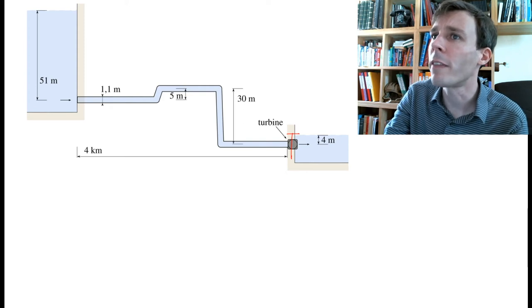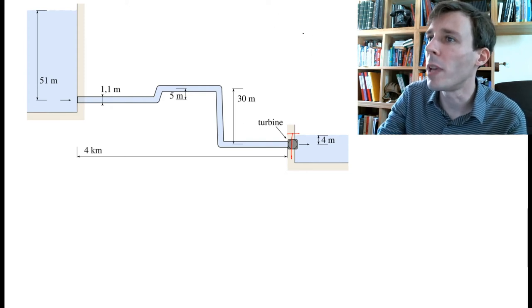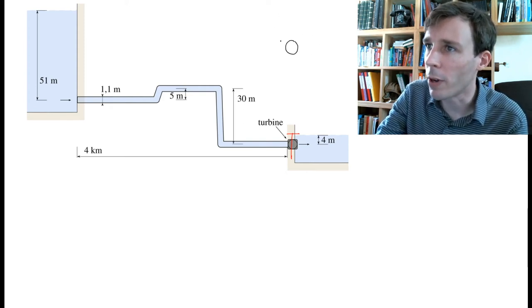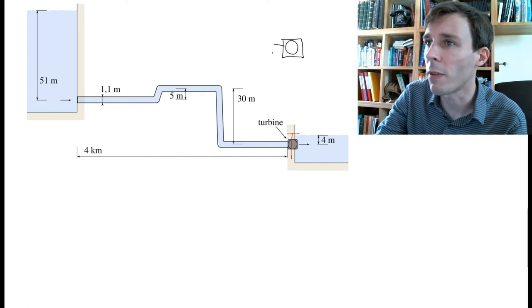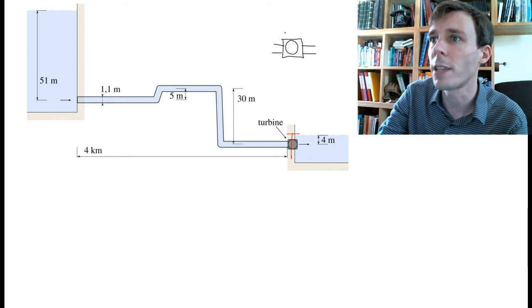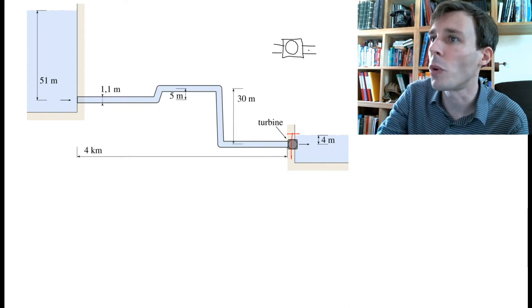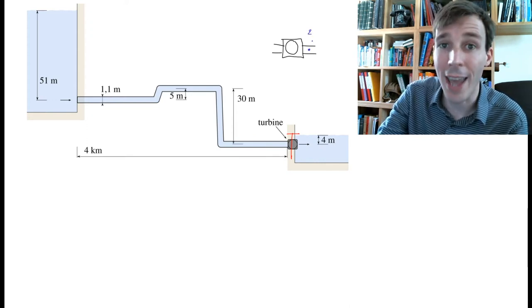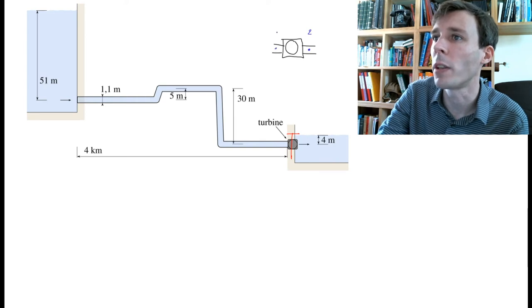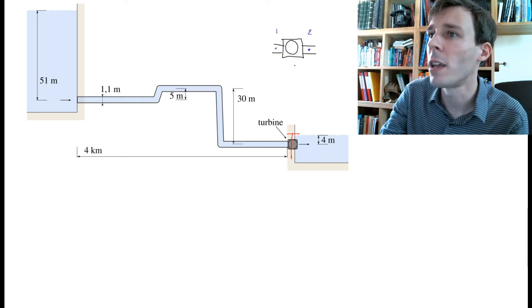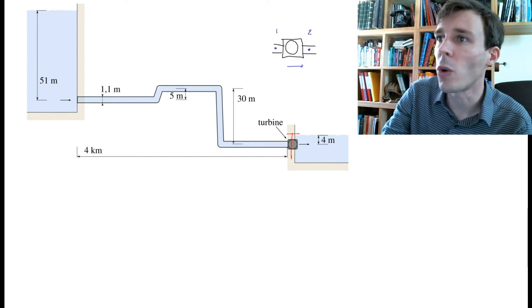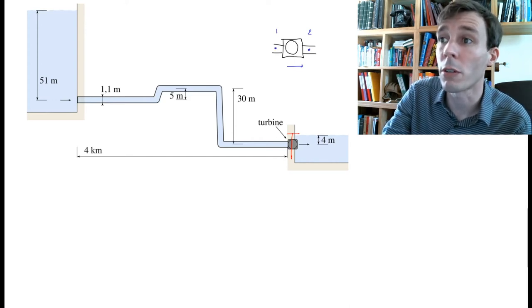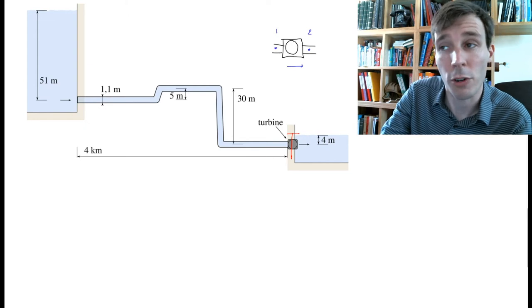So we have a turbine - if I try to zoom in, it's a device like this. The pipe arrives on the left and leaves on the right. We have point 2 which is the outlet of the turbine and point 1 which is the inlet. The flow goes from left to right, from 1 to 2, and the question is: what is the difference between the pressure at point 2 and the pressure at point 1?